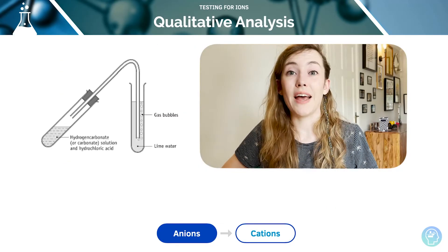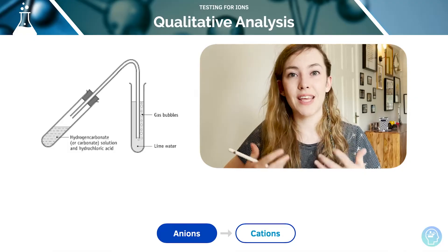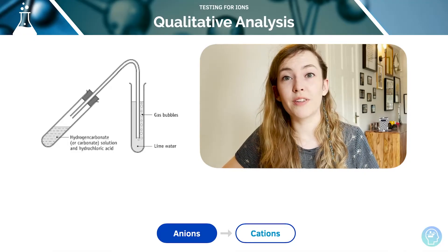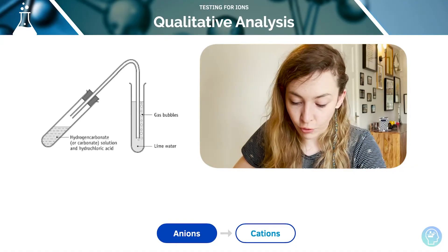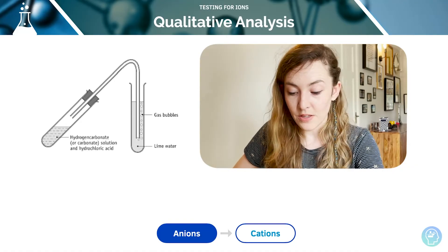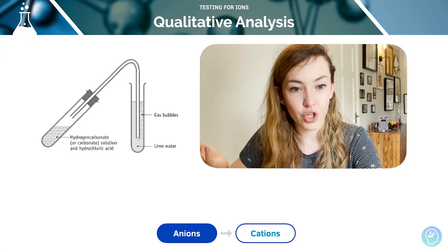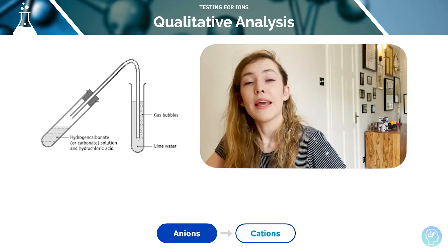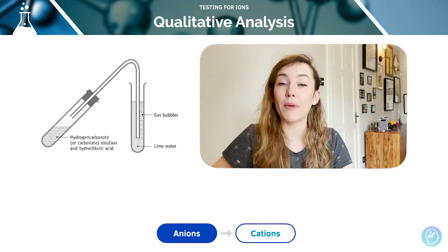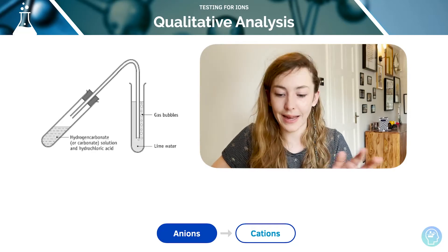If you want to test, if you see effervescence and you need to test whether that is carbon dioxide, I'm sure you'll remember a test from GCSE. We can bubble that gas through lime water. We'll collect it via collecting tube and bubble it through lime water. The carbon dioxide is going to react with the lime water, giving the white calcium carbonate precipitate, and that's what makes it look cloudy.